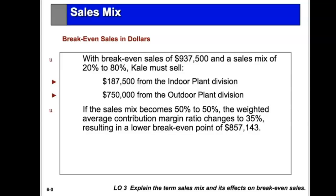With a breakeven of $937,500 and a sales mix of 20/80, we break that down: 20% of $937,500 is indoor sales and 80% is outdoor sales. As a note, if the sales mix were 50/50 instead, the weighted average contribution margin would change to 0.35, resulting in a lower breakeven point.